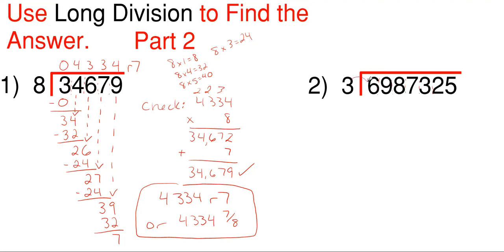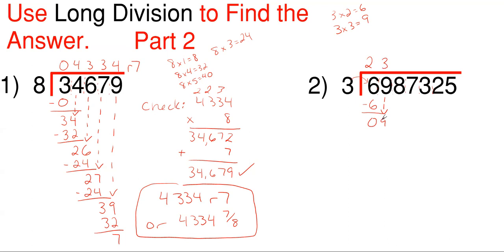So our first one is 3 into 6 — how many times does 3 go into 6? Well, 3 times 2 is 6, and it's not going over 6, so we can place that 2 directly above our number of 6. Then 3 times 2 gives me 6, and we subtract: 6 minus 6 gives me 0. Whenever you see a 0, that's pretty good. And then I'm going to drop my next number of 9, so now I have 9. How many times does 3 go into 9? Well, 3 times 3 is 9, so I take that 3 and put it right up above my dropped number.